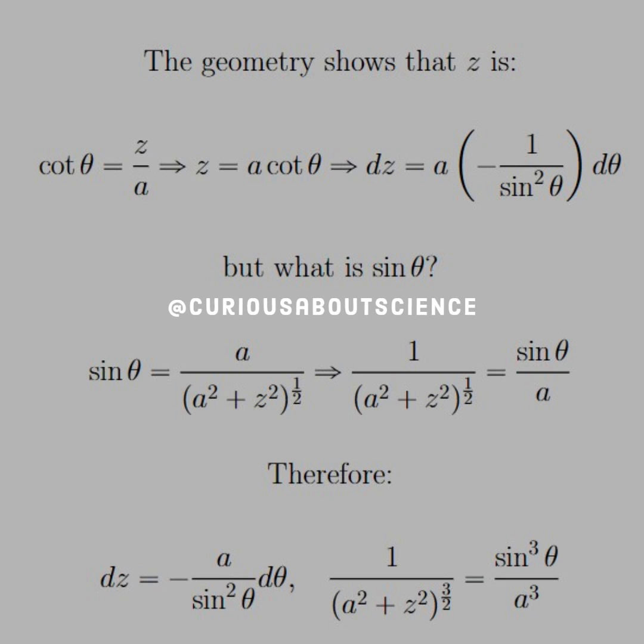We know that from this geometry, going back to our basic trig functions, tangent would have equaled A over Z. So cotangent equals Z over A. Solve that for Z, and we get Z equals A cotangent theta. Take the derivative, we get DZ equal A times negative 1 over sine squared theta times D theta, right?